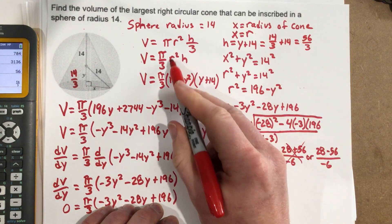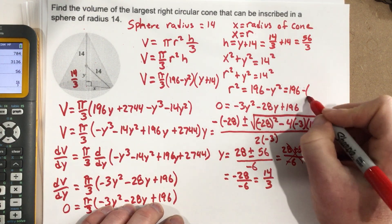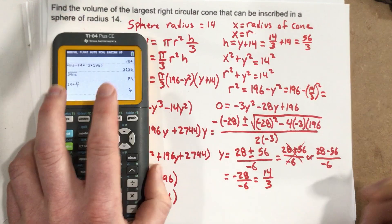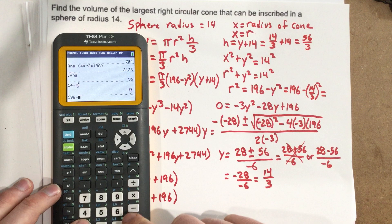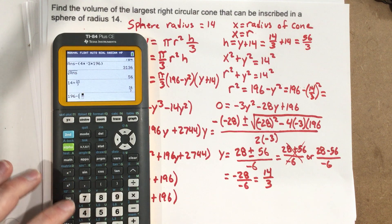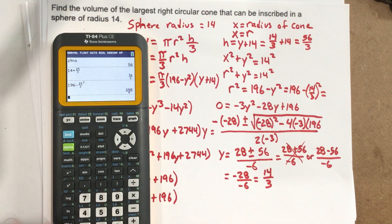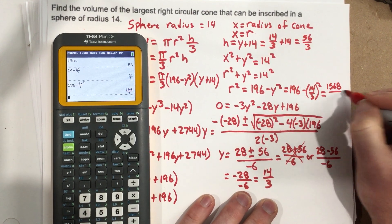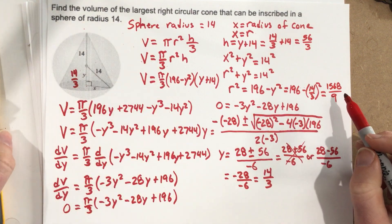Now we can find r². Using r² = 196 − y² = 196 − (14/3)² = 196 − 196/9 = 1,568/9. So r² = 1,568/9.